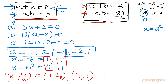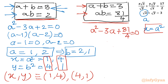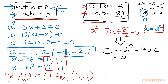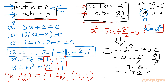For Case 2: ab = 81/4 and a + b = 3. Writing the quadratic: a² − 3a + 81/4 = 0. Computing the discriminant: D = (−3)² − 4·(1)·(81/4) = 9 − 81 = −72. Since D is negative, this gives complex solutions, which we reject as x and y must be positive real numbers. So this system is discarded.